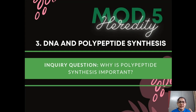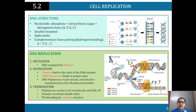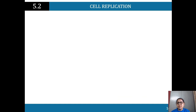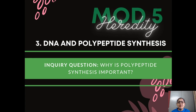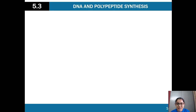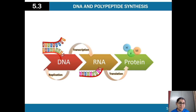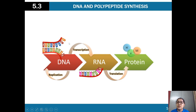Let's look at DNA and polypeptide synthesis. We know that cell replication is happening — it's a huge process. DNA is being replicated; we looked at meiosis and have our four daughter cells ready. But now what? Why is it important, and how does it impact polypeptide synthesis? Polypeptide synthesis means we're making protein. We looked at DNA replication; now we are looking at transcription and translation and how this whole process gives us proteins.